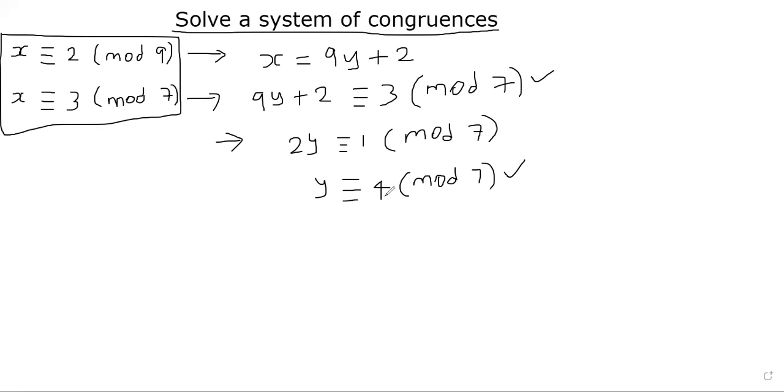What is the meaning of y is congruent to 4 mod 7? This means y must be 7 times some number, let's call it z. z is again an integer, plus 4. That's the meaning of congruence anyways.